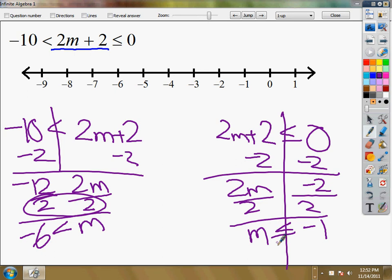So I've got m is greater than negative 6 but less than or equal to negative 1. By the way, all of these so far that I've done have made barbells but that doesn't necessarily mean they're always that way. Often times they're facing away from each other.